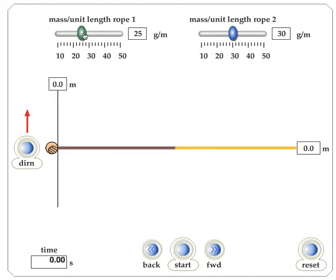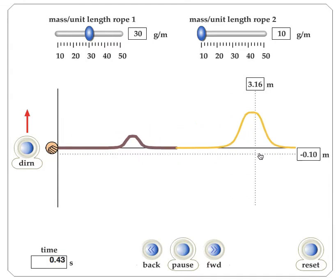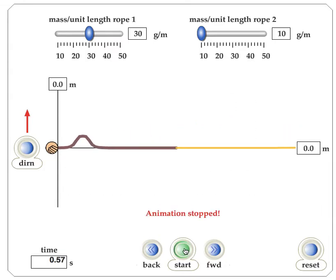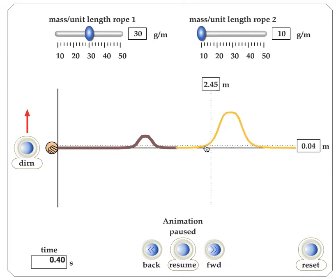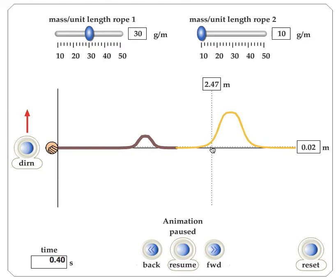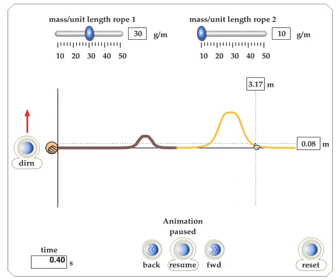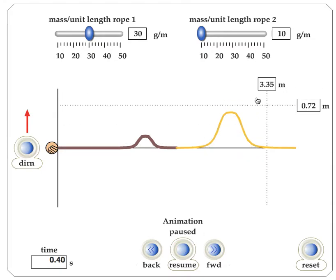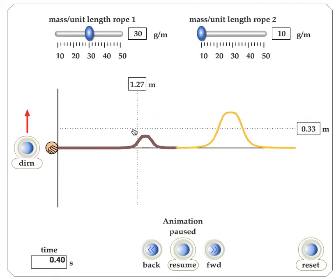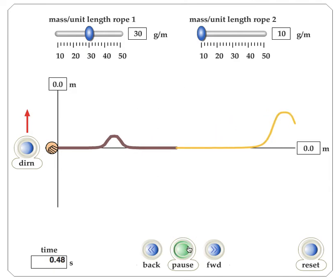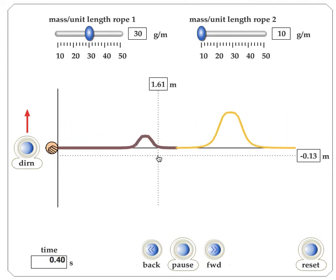Whereas if I reverse this, so I make this 30 and this 10, you can see it speed up. When it does speed up, if I pause it, you can see how the wavelength — and I understand this is not exactly the wavelength, but you get the idea — the wavelength is actually increasing. You can see that, and that has to happen, thinking about n equals c over v. The transmitted pulse is still in phase, because the transmitted pulse is always going to be in phase. But in this case, the reflected pulse that comes back is also in phase — you can see it come back in phase.